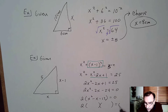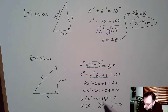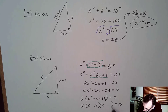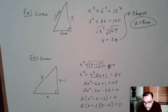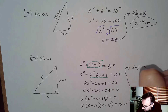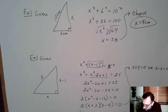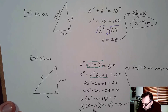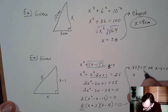We can factor x squared minus x minus 12 further. x squared breaks up as x times x, and 12 breaks up as 1×12, 2×6, or 3×4. The middle term must be negative 1, so we choose 3 and 4 — with 4 negative and 3 positive, giving (x + 3)(x − 4). Setting each factor equal to 0: x equals negative 3 or x equals 4.